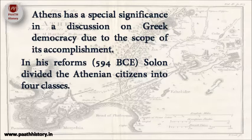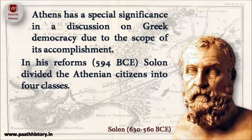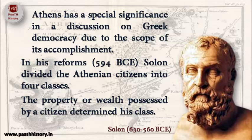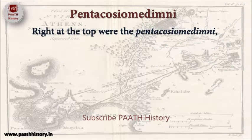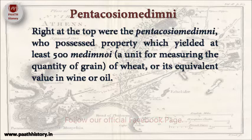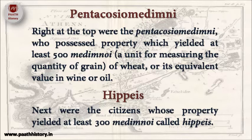In his reforms in 594 BCE, Solon divided the Athenian citizens into four classes. The property or wealth possessed by a citizen determined his class. Right at the top were the Pentacosia Medimni, who possessed property which yielded at least 500 Medimni — a unit for measuring the quantity of grain or its equivalent value in wine or oil. Next were the citizens whose property yielded at least 300 Medimni, called Hippes.